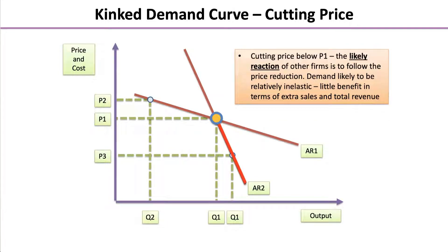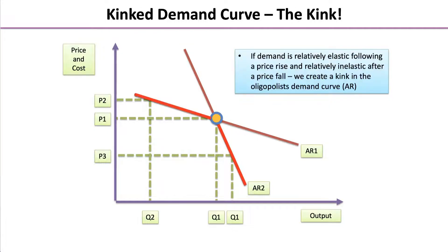Cutting prices below P1, the likely reaction of other firms is to follow the price reduction. Demand is likely to be relatively inelastic, so there will be little benefit in terms of extra sales generated by cutting the price, and total revenue will be unlikely to change very much. If demand is relatively elastic following a price rise and relatively inelastic after a price fall, we create the kink in the oligopolist's demand curve — in other words, the average revenue curve — highlighted by the red area on your screen.